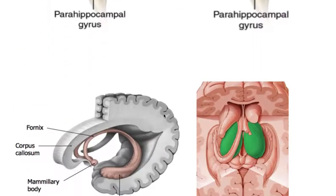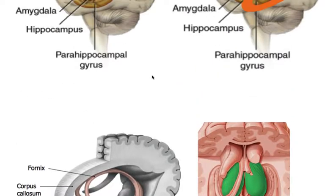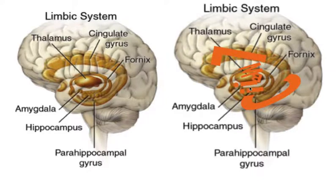The M can represent the fornix. You might say this doesn't really look like an M, but if you look at these sections, you can see that it does trace an M shape if you consider both sides of the fornix. Remember, this portion is the hippocampus, but you can kind of see an M-shaped analogy there.